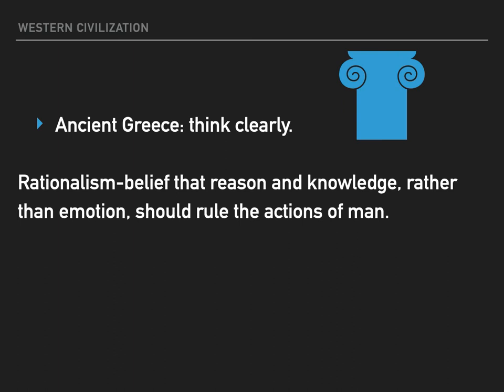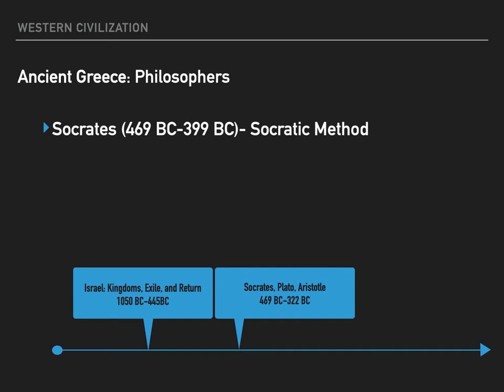The ancient Greeks were the first to think clearly. Rationalism is the belief that reason and knowledge, rather than emotion, should rule the actions of man — always good advice. I want to introduce you to three Greek philosophers whose teachings still shape Western thought. The first is Socrates, born around 469 BC in Athens. He was the greatest influencer on Western thought from the ancient world, and like Jesus, never wrote a single line.